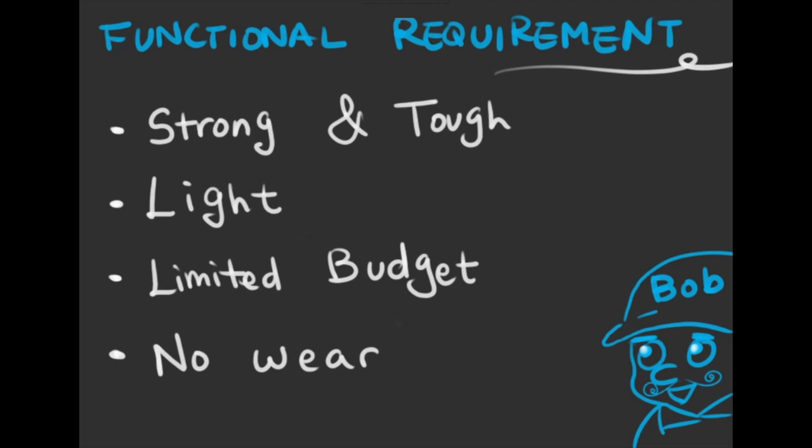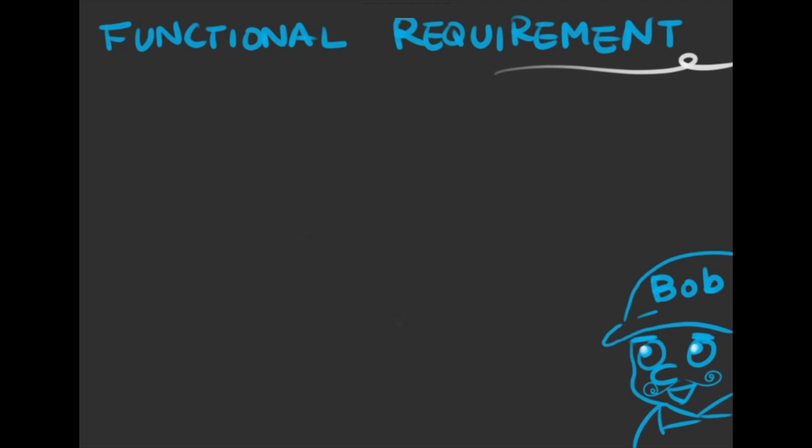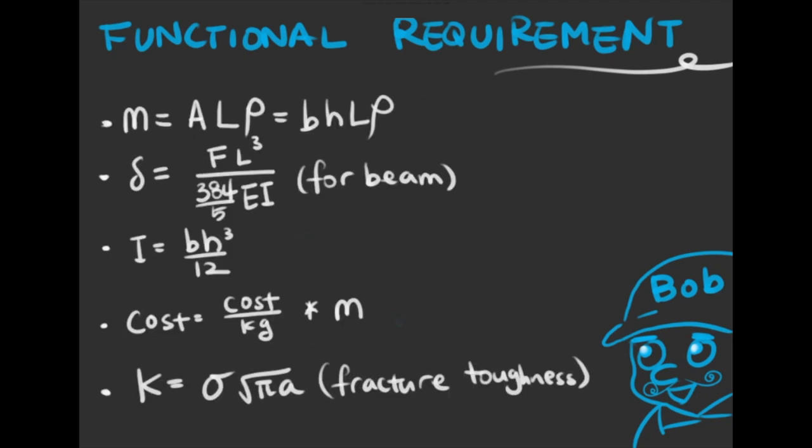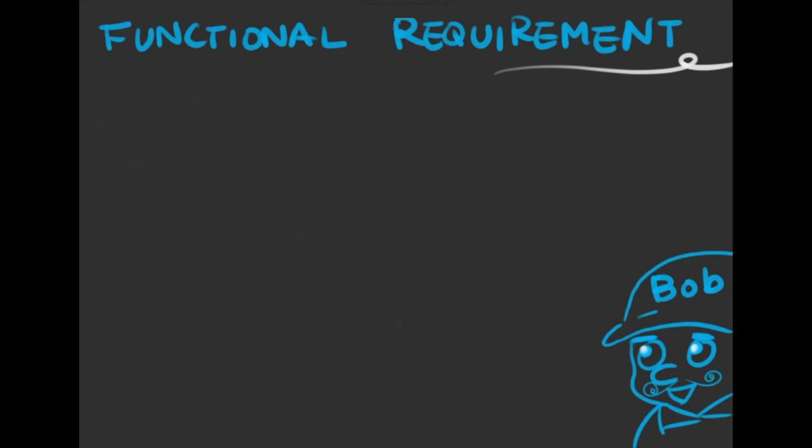So from this list, we can see these are some useful equations we need to derive the MPI. The first equation is used to find the weight of one beam. The second one is the deflection formula for one chassis beam. The third equation is the second moment of inertia for a beam and cost is expressed as cost per kilogram multiplied by mass. And then lastly, but not least, the equation for K stands for fracture toughness and it's related to crack length and stress.